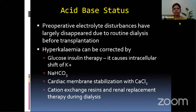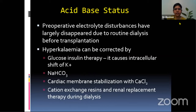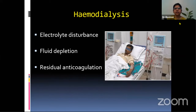During pre-operative preparation, acid-base status should be looked into and corrected. Electrolyte disturbances have largely disappeared due to routine dialysis before transplantation — we do dialysis a day before surgery. Hyperkalemia can also be corrected by giving glucose-insulin therapy, which causes intracellular shift of potassium, sodium bicarbonate for cardiac membrane stabilization with calcium chloride, cation exchange resins, and renal replacement therapy during dialysis. Any disturbance in electrolytes is largely uncommon now.